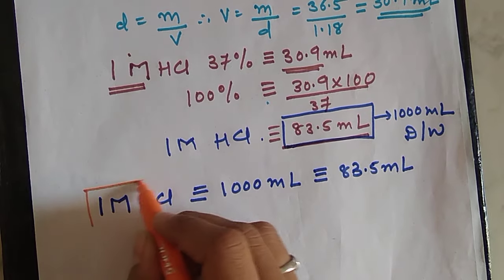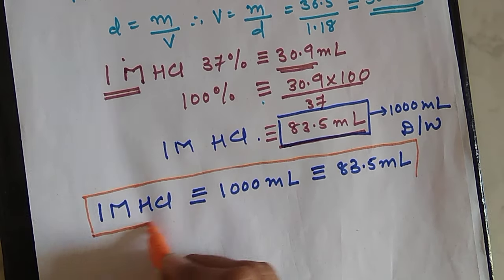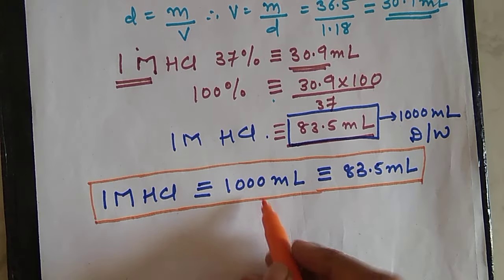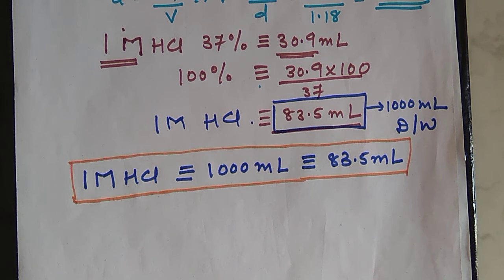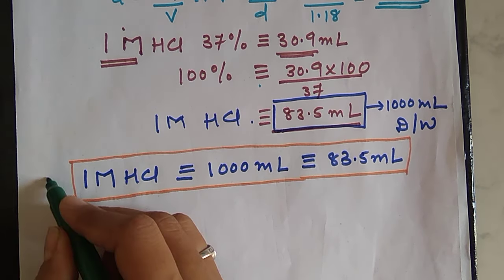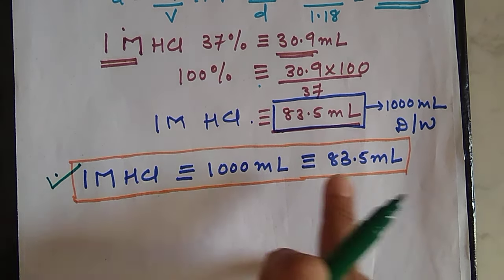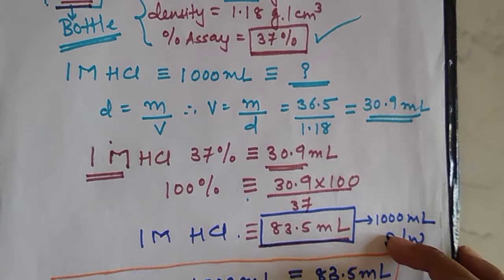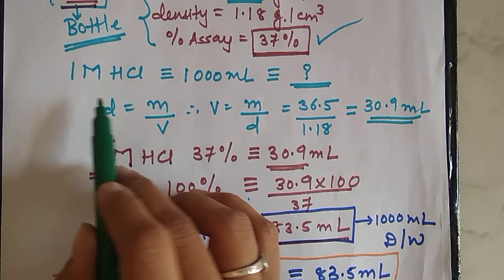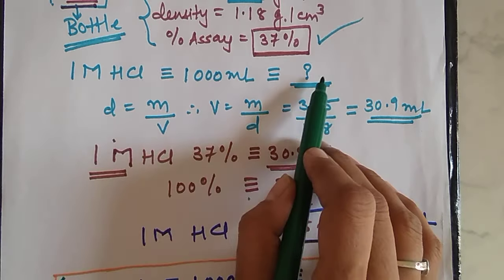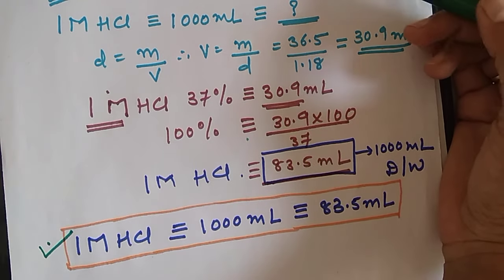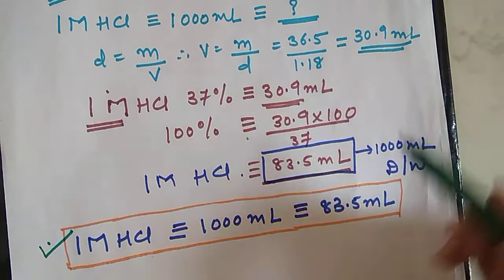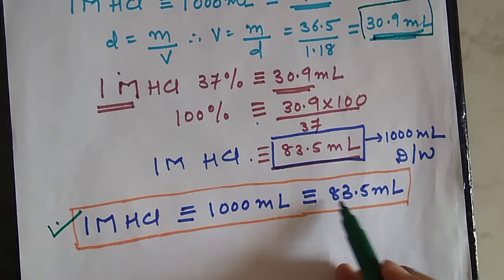When we take 83.5 ml of that concentrated HCl from the bottle directly and dissolve it to make a 1 litre solution, we get 1 molar solution. So this is our factor. From this factor we can calculate as much molarity as we require, or as much volume as we require. This factor must first be calculated. Because HCl is in liquid form we need to calculate it in this manner — if it had been in solid form we would directly write the grams. So we first convert it into a solid equivalent, that is how much equivalent volume is present, and then we determine the factor.